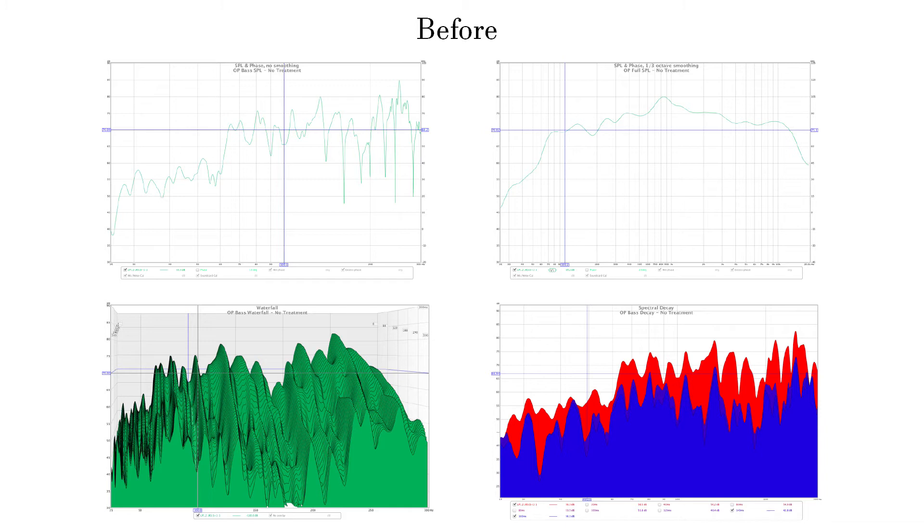Bottom left has a waterfall graph, note the high Q lingering resonances. Bottom right is a decay plot, my preferred way of viewing decay. Red is the original SPL and blue indicates 150 milliseconds. Many peaks have 10 decibels of decay or less. These are the four graphs you need to master if you want good acoustics. Take some time to understand them if you don't.